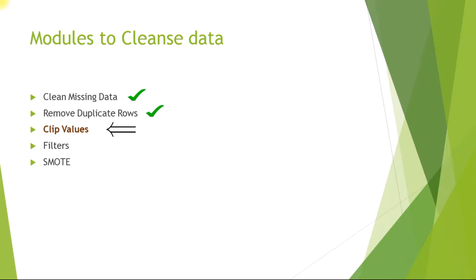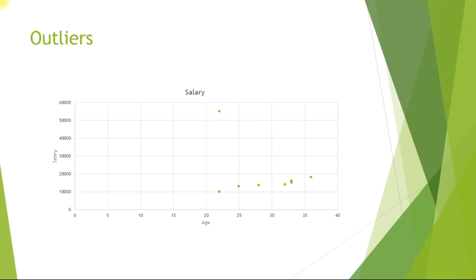Before I get into Azure Machine Learning Studio and start walking you through the Clip Values module, let me tell you some basic concepts — why we need the Clip Values module and what its importance is. Let us take the same graph we saw in the Part 1 video. We have salary on the y-axis and age on the x-axis, and we see a nice trend. But we have a data point where a person aged between 20 to 25 is drawing a salary of more than 50,000, which is quite abnormal — it doesn't fit the normal trend. So this is an outlier, and hence we need to weed it out.